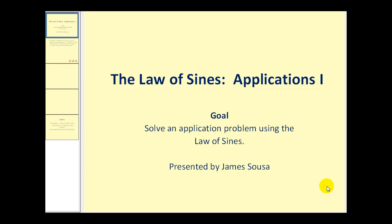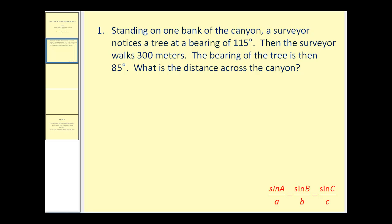Welcome to the first of two videos on the applications of the law of sines. Let's go ahead and take a look at a problem. Standing on one bank of the canyon, a surveyor notices a tree at a bearing of 115 degrees. Then the surveyor walks 300 meters. The bearing of the tree is then 85 degrees. What is the distance across the canyon?